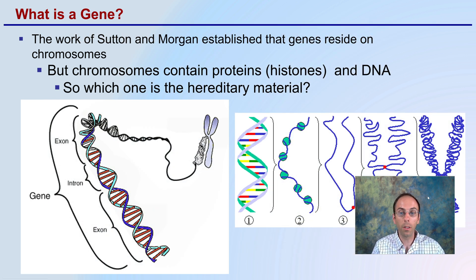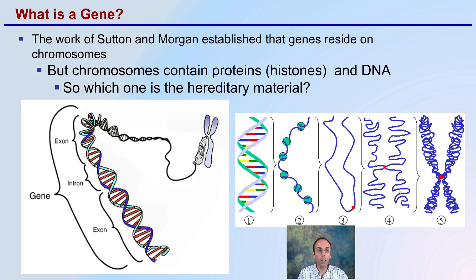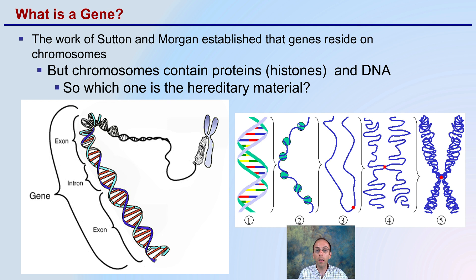The obvious question is: what is a gene? How do we define a gene? A gene is the work of scientists who determined that genes reside in chromosomes. Chromosomes contain proteins known as histones and DNA. Within the chromosome — that condensed form of DNA — the question was: what is the hereditary material? Is it the protein or is it the DNA?